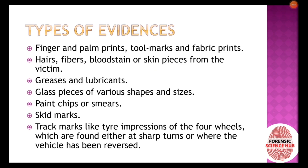The types of evidence that can be found in a vehicular accident include fingerprints, palm prints, tool marks, and fabric prints. Other evidence includes hair of the victim or suspect, fiber transferred from clothing, blood stains, and skin pieces from the victim.